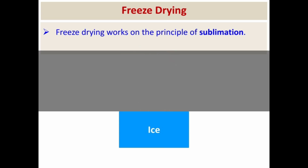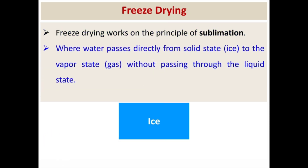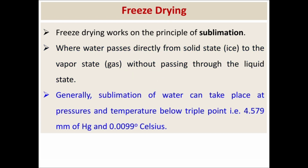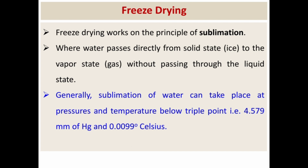Freeze drying works on the principle of sublimation. Sublimation is the process where water passes directly from the solid state to the vapor state without passing through the liquid state. Generally, sublimation of water takes place at pressure and temperature below the triple point, that is 4.579 mm of Hg and 0.0099 degrees Celsius.